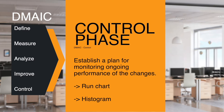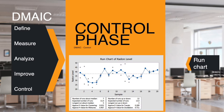A run chart is a plot of an individual metric over time. It makes it easy to spot trends and patterns over time. Four things to look for when using run charts: clusters, mean shifts, oscillations, and trends.